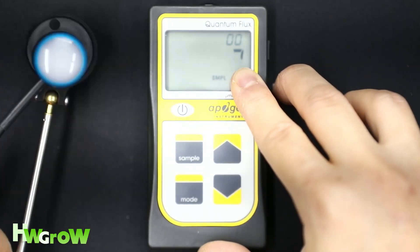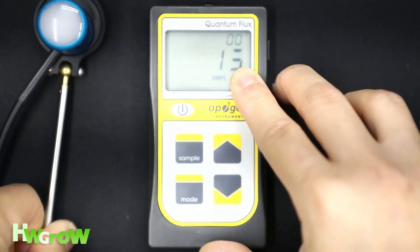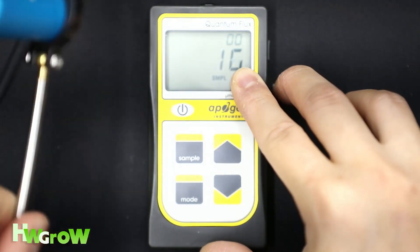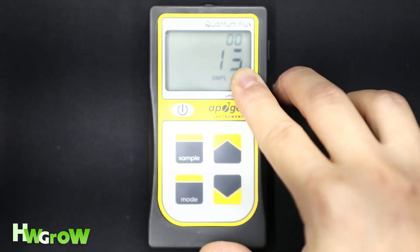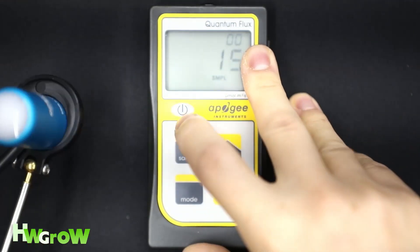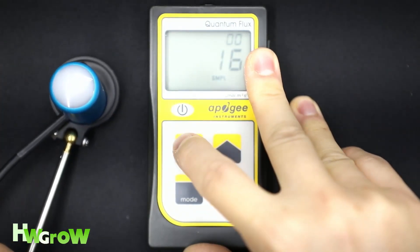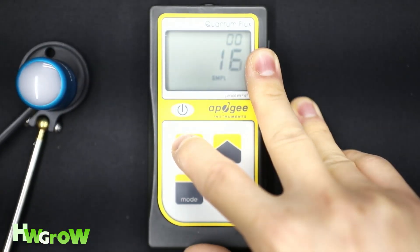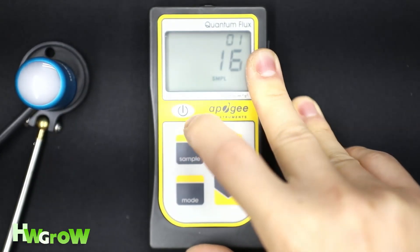Now it's reading. Whatever the meter is reading is on the sensor. So you place this wherever you want to take a reading, and to take a reading, you just hit sample. Right now, let's say 16, sample.